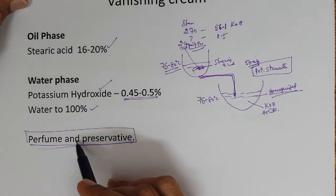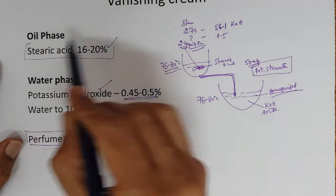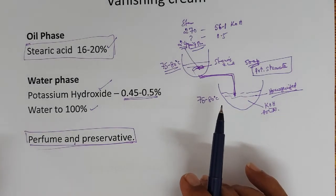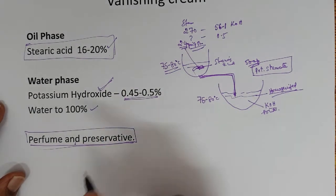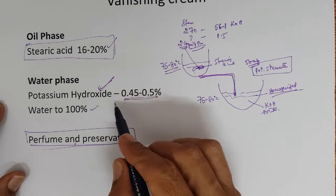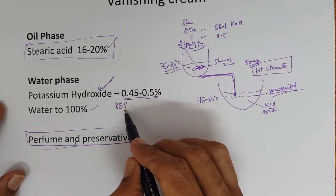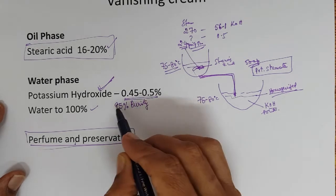We will see two important things here. Stearic acid - since it is the main oil phase, we will go into the depth of stearic acid and the quality of stearic acid that should be used for vanishing cream. Potassium hydroxide - you have to be very careful.